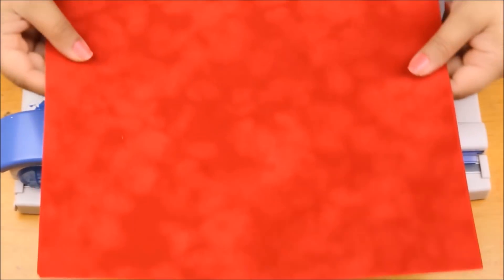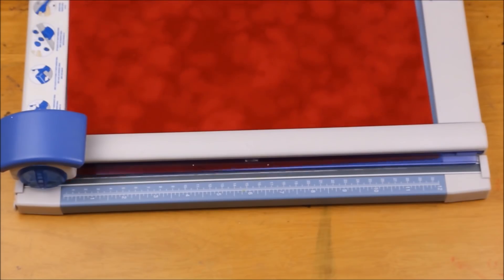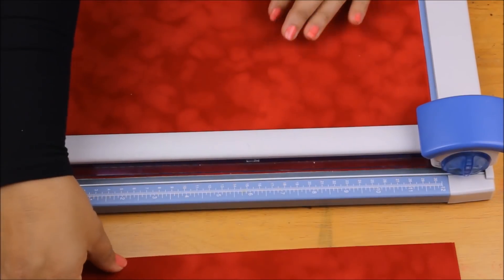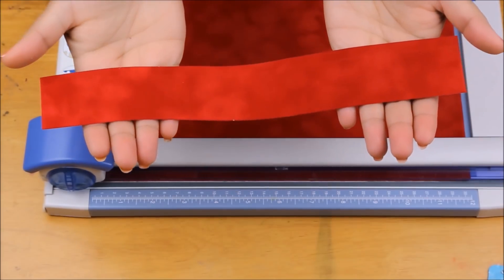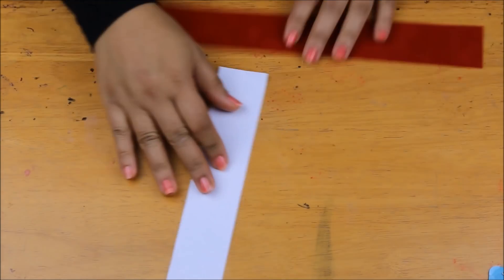First, I'm going to make the body of the choker. For this, I'm going to cut my velvet paper into a strip. The length of the strip totally depends on the size of your neck but for the width, I'm keeping it about one and a half inches. You can size up or size down depending on your preference.